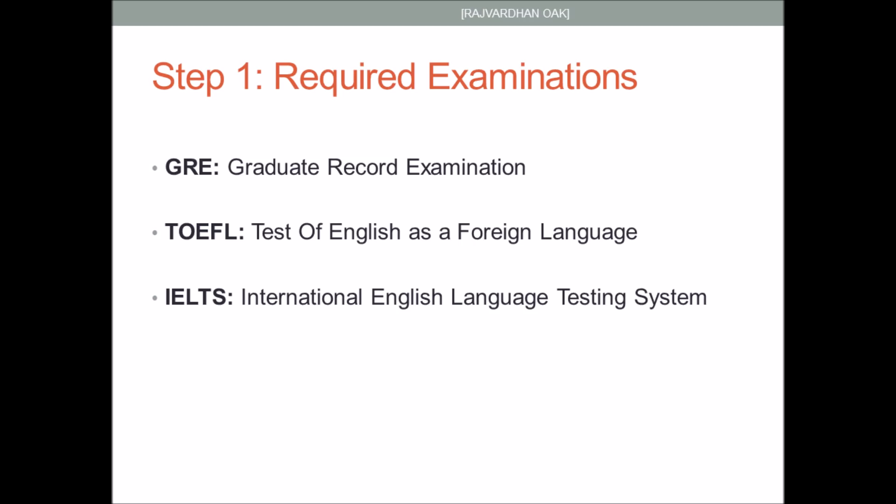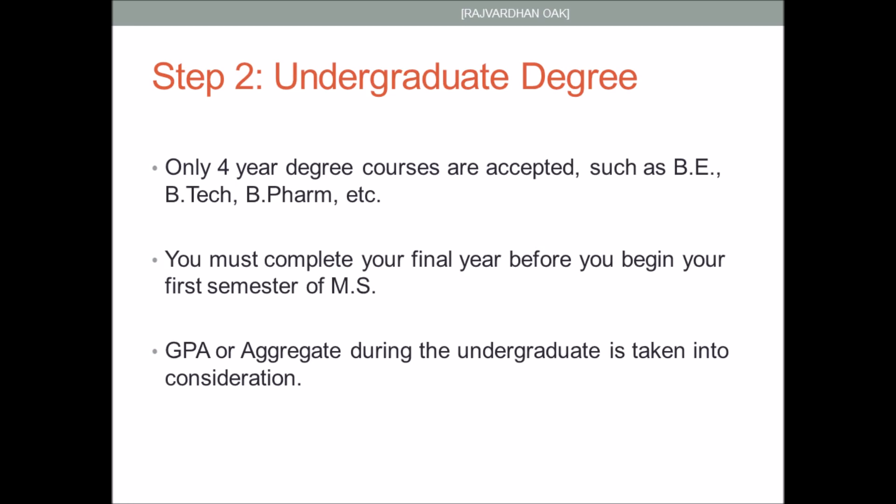Now we'll talk about the undergraduate degree. The most important thing to remember is that US universities accept undergraduate degrees of four years only — that is, you must have completed degrees such as BE, BTech, or BFA before you start your first semester of MS. If you are pursuing a degree like BSc, BCS, or any three-year course, you might have to complete one more year of a master's degree or another undergraduate degree before you can apply.